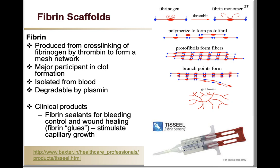The next type of example is fibrin scaffolds. Fibrin is produced by the cross-linking of fibrinogen — fibrinogen reacts with thrombin to start polymerizing, with the fibrinogen attaching end-to-end. Initially it forms protofibrils, those protofibrils aggregate into fibers, and those fibers branch off forming a hydrogel. Fibrin is a major participant in blood clot formation together with platelets. It is isolated from blood and is degradable by action of the enzyme plasmin — one protein enables it to form, and one protein enables it to be degraded. Degradation can be fairly quick, within about two weeks, and it has been utilized as a sealant for bleeding control and wound healing, where it can act as a glue and stimulate capillary growth.